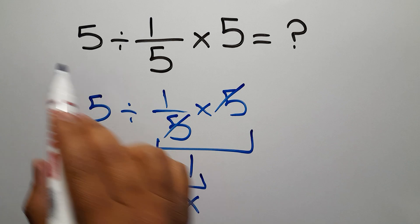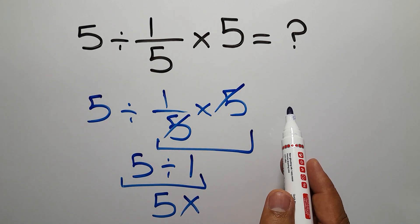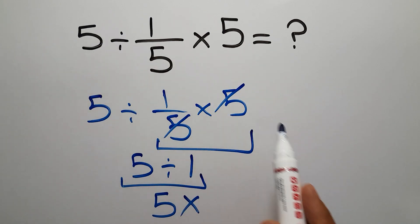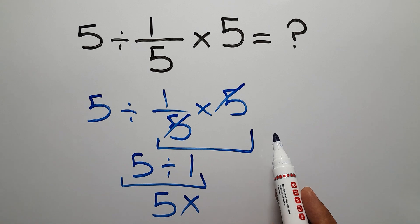Because multiplication and division have equal priority, we have to work from left to right.